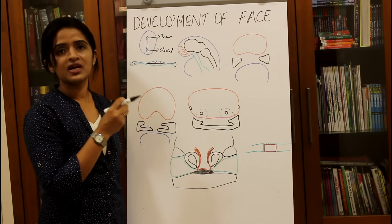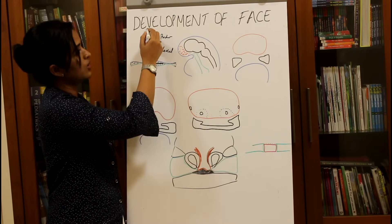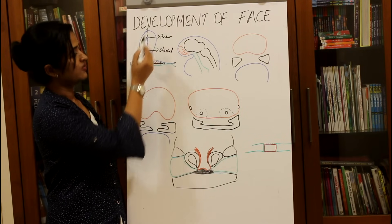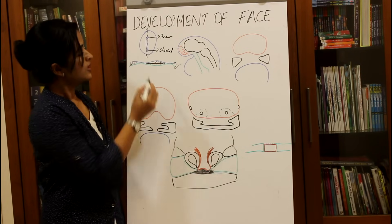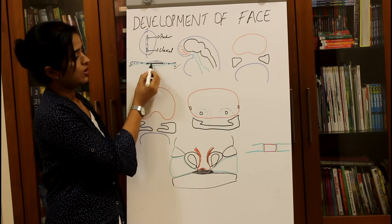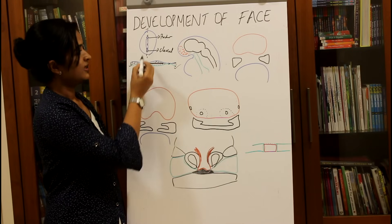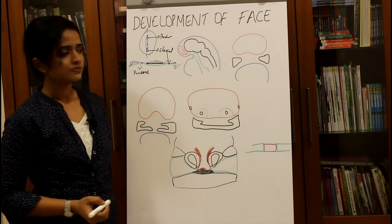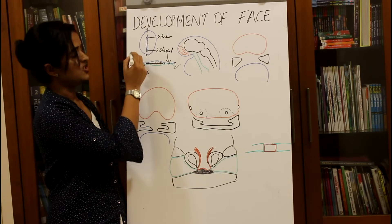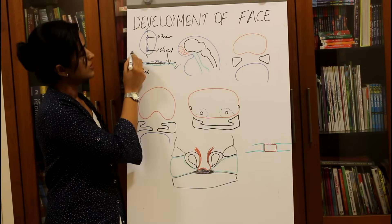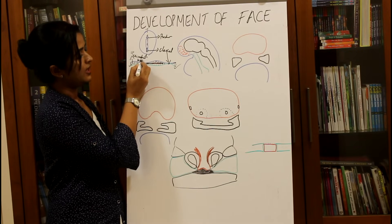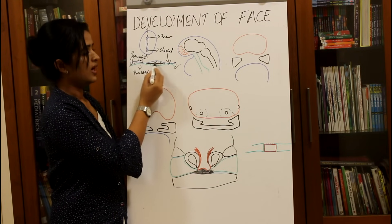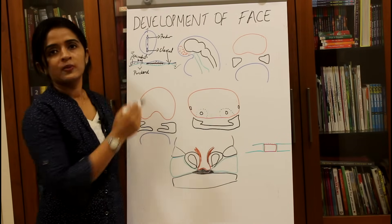These are the two tubes within the intraembryonic mesoderm. If you take a section at the midline, you can see the cephalic end and the caudal end. At these two points the intraembryonic mesoderm is not going in between the ectoderm and endoderm. The cephalic end gives rise to the pre-cordal plate, and the caudal end is the cloacal membrane. The mesoderm in front of the pre-cordal plate is the region where the heart forms — this is called the pericardial bar.